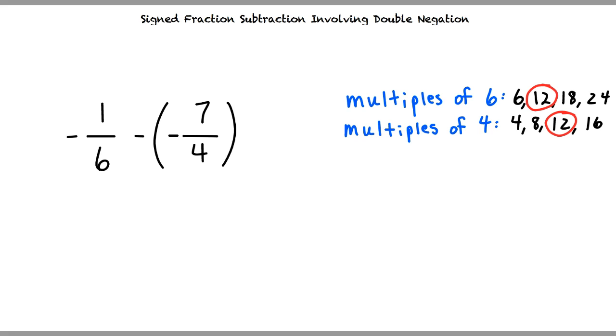Now that we know what our least common denominator is, we must make the denominators of both of our fractions equal to our least common denominator of 12. What would we need to multiply our first fraction's denominator by to get our desired value of 12? The denominator of our first fraction is 6, so we would multiply by 2 to get the result of 12. Great job.